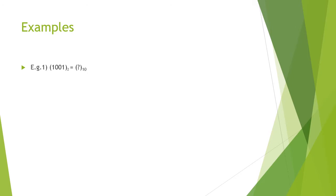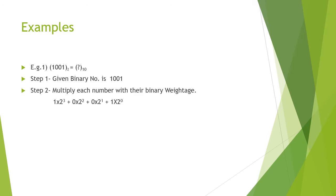Now let us apply the steps one by one. The given binary number is 1001. We multiply each digit with its binary weightage. Since this is a binary number, the weightage is 2 raised to the corresponding power. The first place (LSB) is 2 raised to 0, the second place is 2 raised to 1, the third place is 2 raised to 2, and the fourth place is 2 raised to 3.